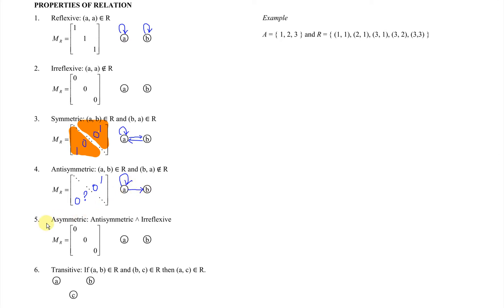For asymmetric, it's the combination of anti-symmetric and irreflexive. We should have only a one-way relation: if A relates to B, then B must not relate to A. At the same time, for all the vertices, we should not see any looping, which means that the diagonal entries all equal to 0.